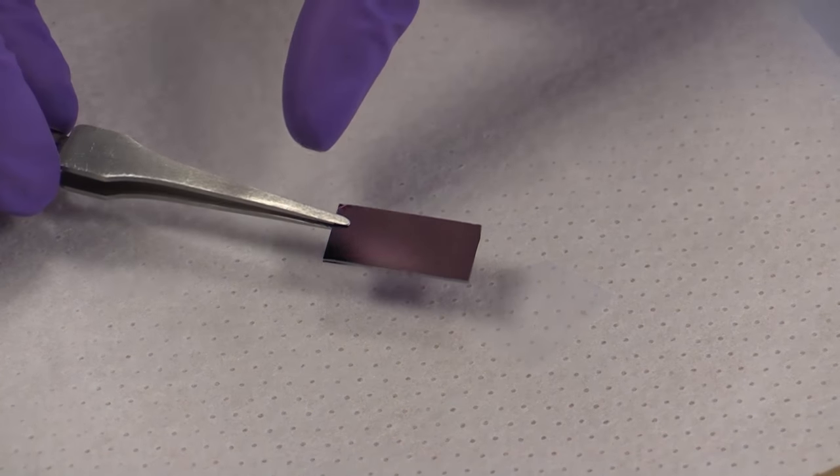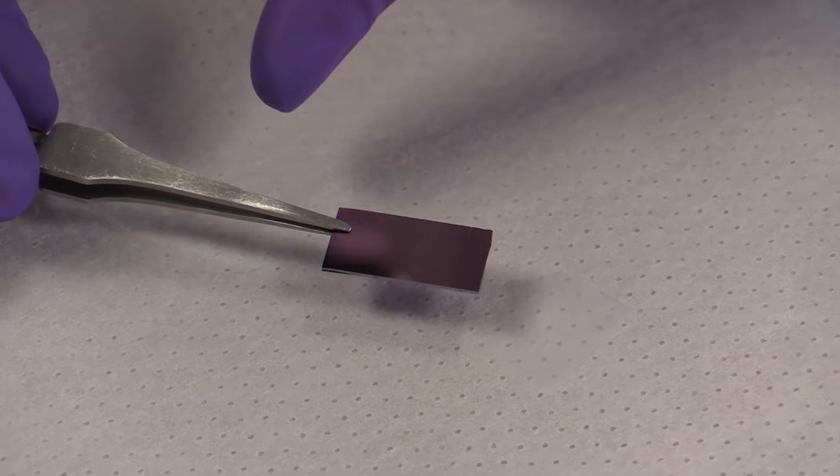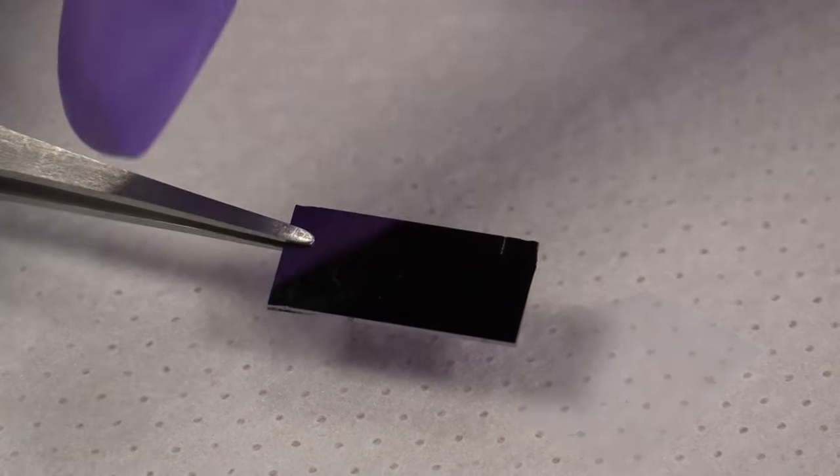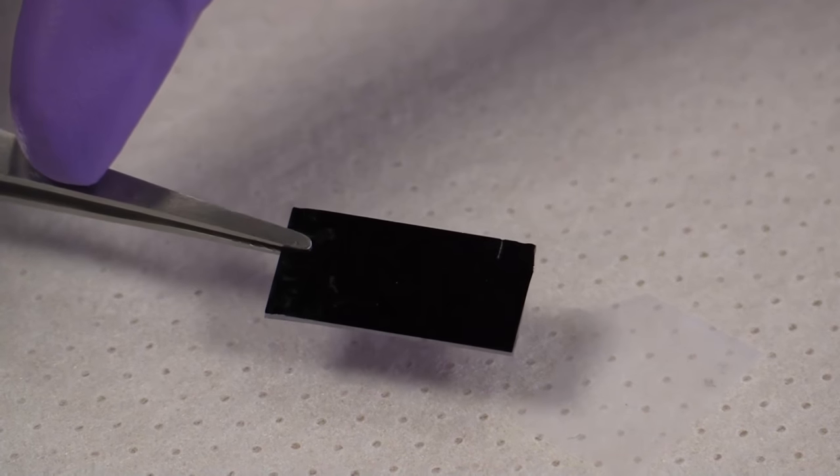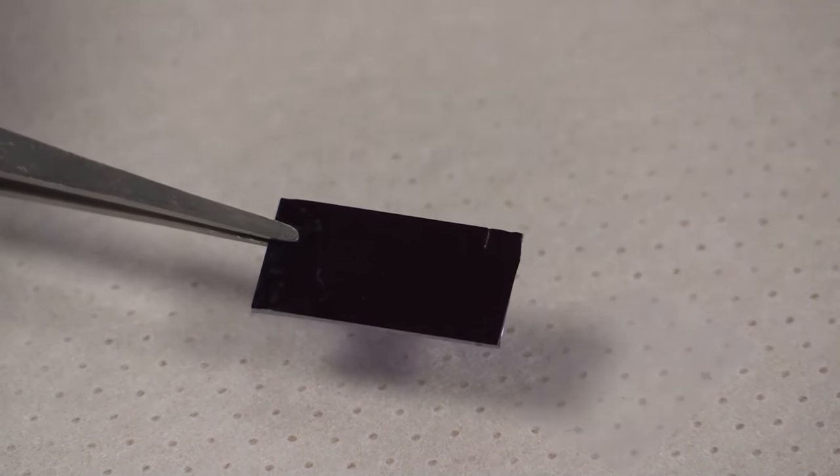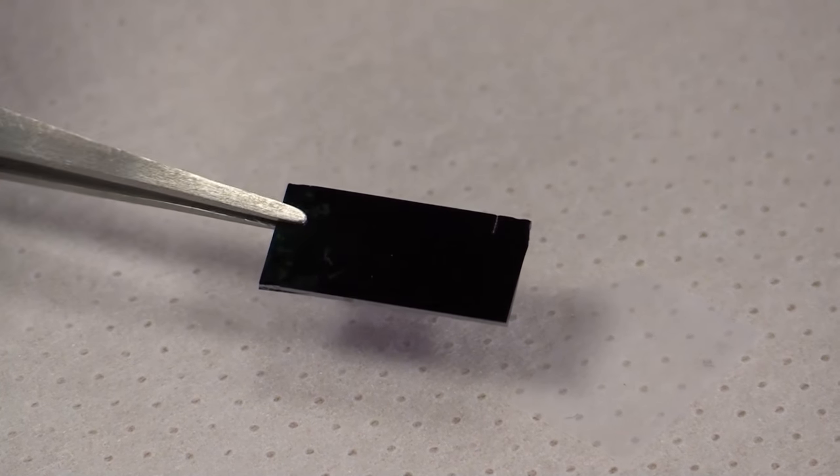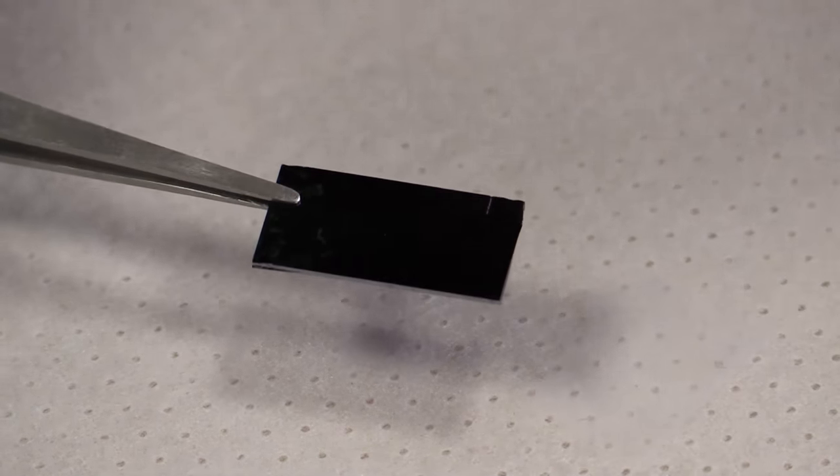On the right side here, or your left, we can see the discoloration that is indicative of monolayer growth. And now we're going to go to the microscope and take a quick look.